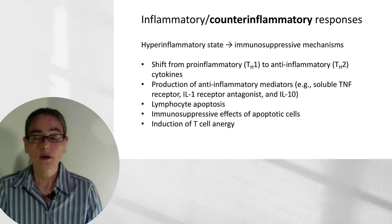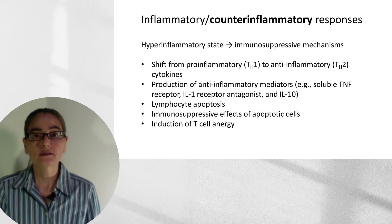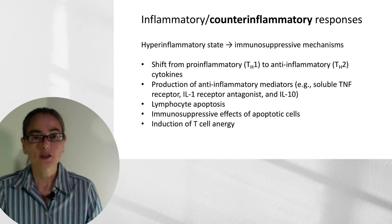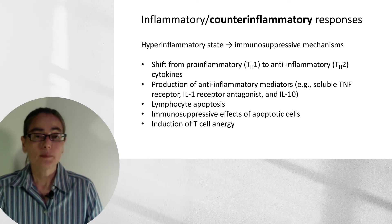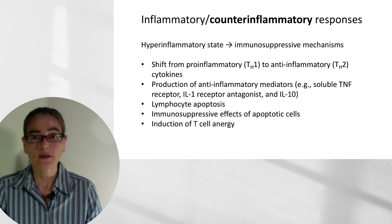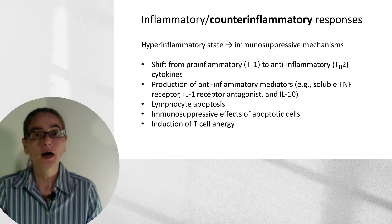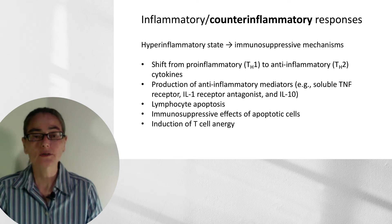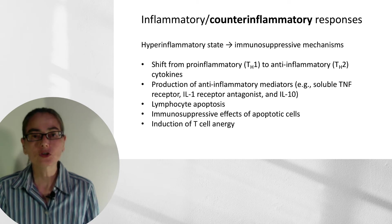The body tries to return to homeostasis by bringing in immunosuppressive mechanisms. These include a shift from pro-inflammatory Th1 to anti-inflammatory Th2 cytokines, and the production of anti-inflammatory mediators such as soluble tumor necrosis factor receptor, IL-1 receptor antagonist, and IL-10. Lymphocytes will begin undergoing apoptosis, and there is an immunosuppressive effect of apoptotic cells, as well as induction of T-cell anergy. So there is a seesaw back and forth between inflammatory and counter-inflammatory responses.